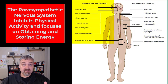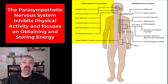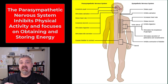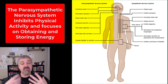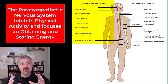The parasympathetic nervous system is all about rest and digest — relaxation, regeneration. It's going to be about storing energy, decreasing blood flow to the heart and lungs, and increasing blood flow to your gastrointestinal system. Digestion, urination, defecation — these are all going to be parasympathetic activities.